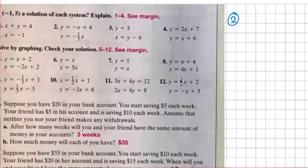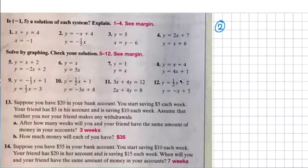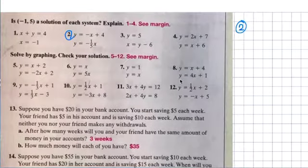I'm figuring out how to use this stuff. Okay, I took a picture from the book. You're doing even numbers, so you're doing number two. Is negative one and five a solution?